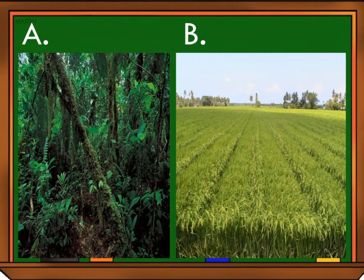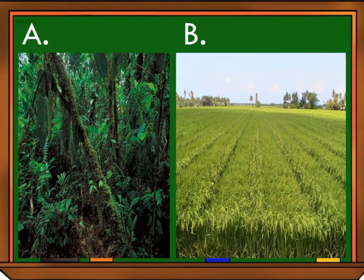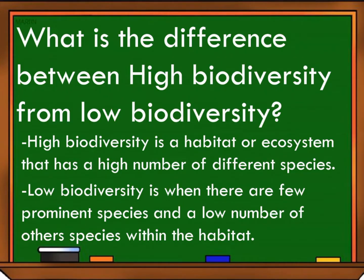Picture A presents a tropical rainforest and picture B is a rice field. The next picture shows biodiversity. Biodiversity is the variety of life on Earth in all its forms and all its interactions. A high biodiversity is a habitat or ecosystem that has a high number of different species. Low biodiversity is when there are few prominent species and a low number of other species within the habitat.